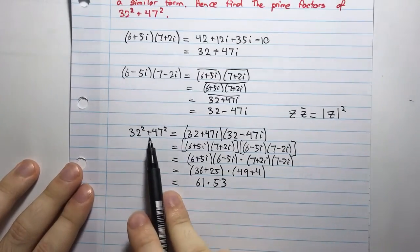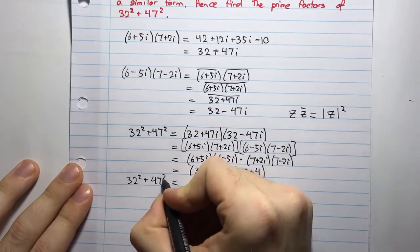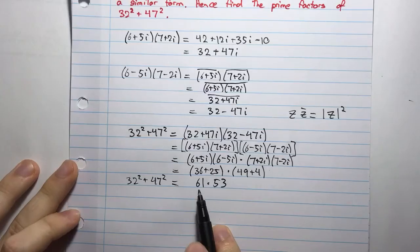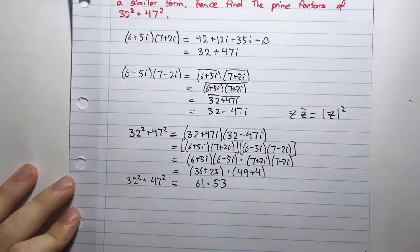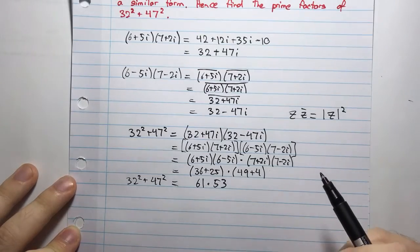So, 32² + 47² is some number. I don't really know what it is, but it's some number. And that's equal to 61 multiplied by 53. And of course, if you're in an exam, you would just punch this into your calculator and check it out.